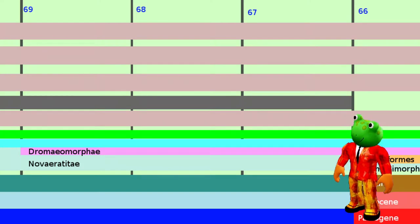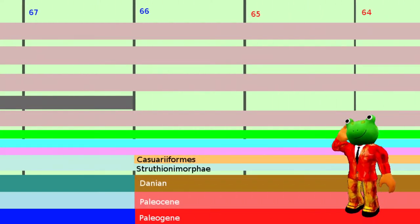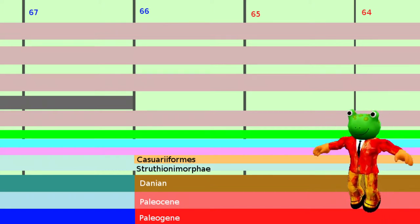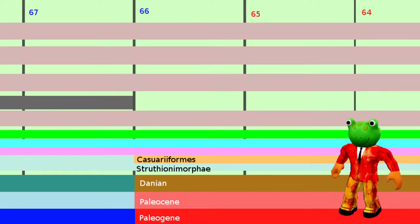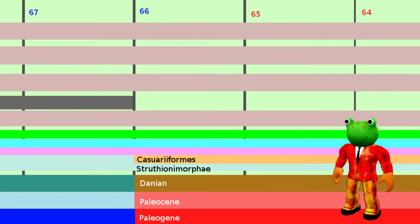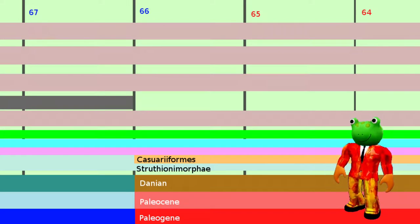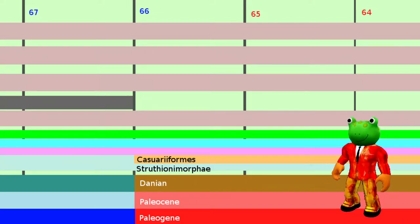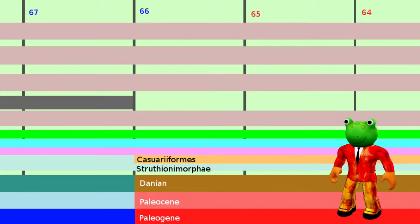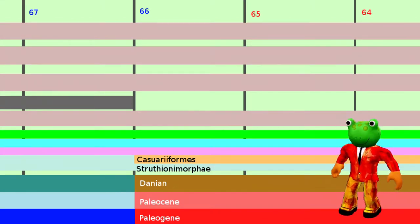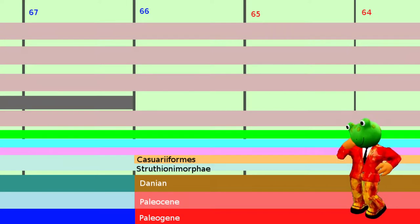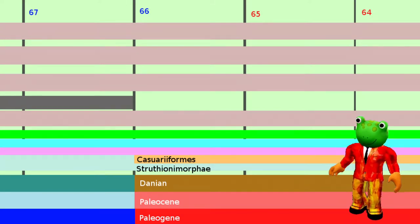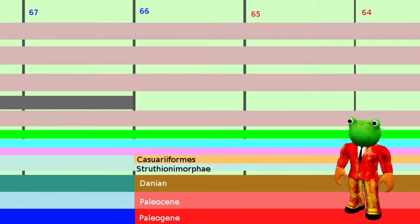The Novioratitae, the New Ratites, split 66 million years ago into the groups of the Casuariformes and the Struthiomorphae. The first group contains cassowary and emu, the second the kiwi and elephant birds. It's also the time of the meteorite impact, the fifth mass extinction at the end of the Cretaceous. It's hard to say why birds survived, and according to the ghost paths we can count about nine different species surviving the disaster. This means that there were many more species who did not survive.